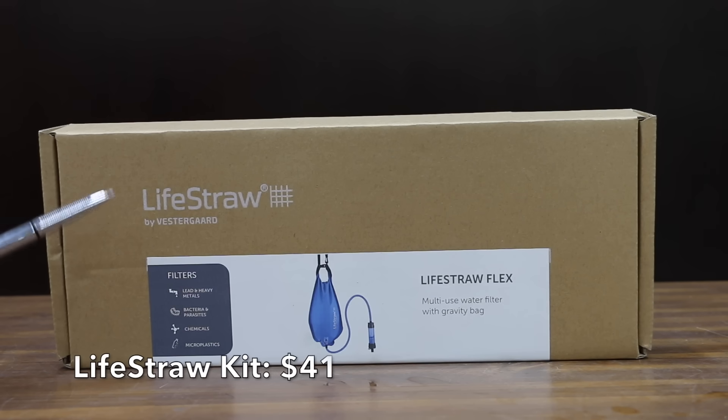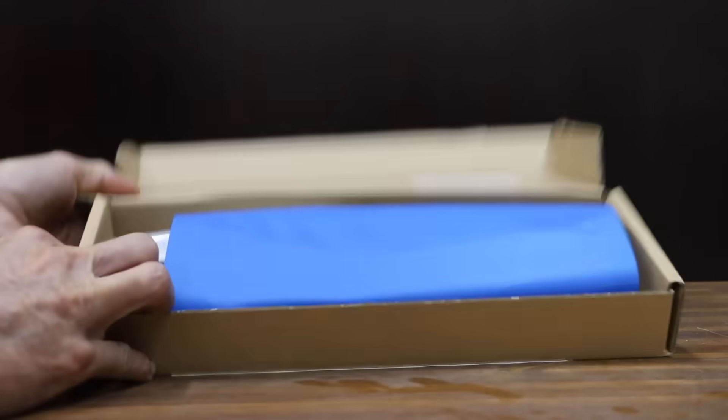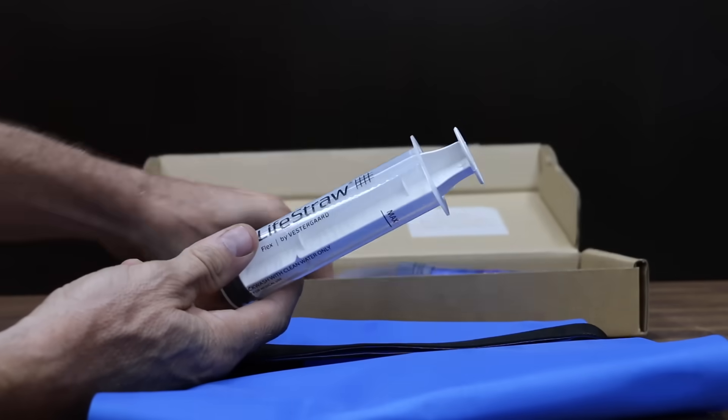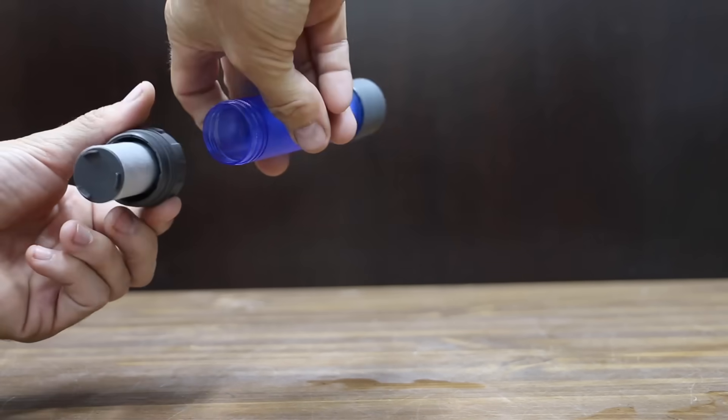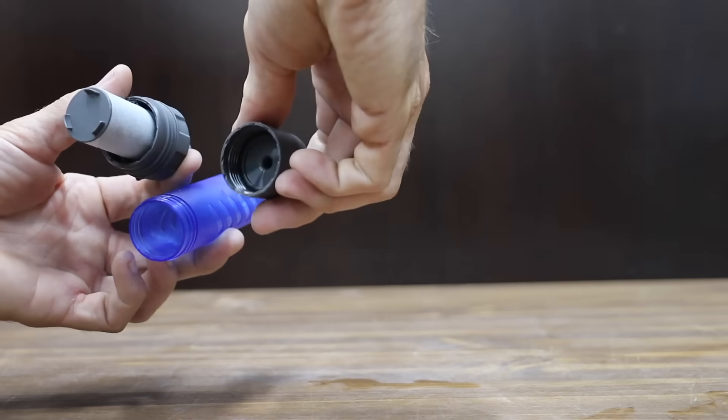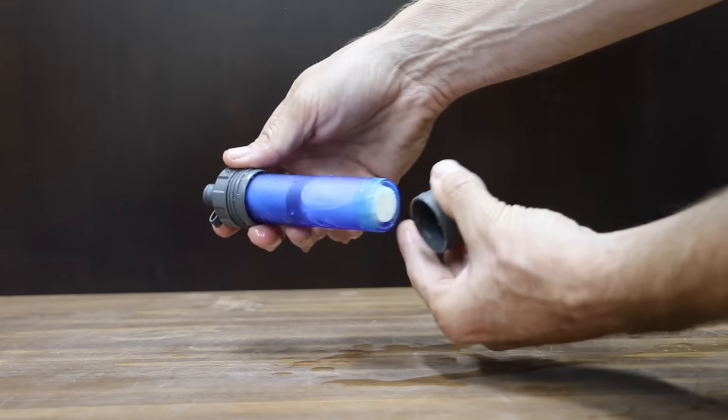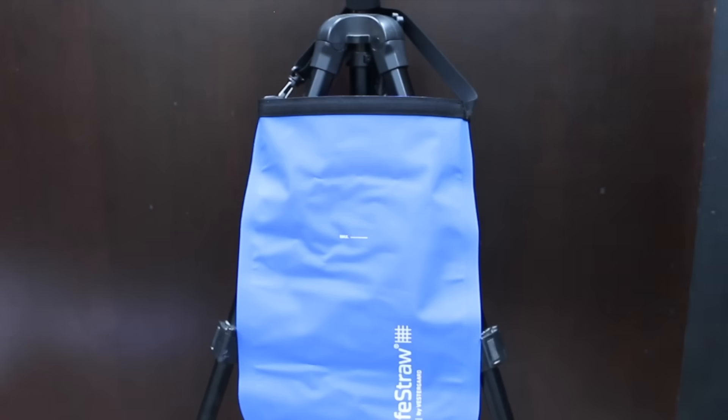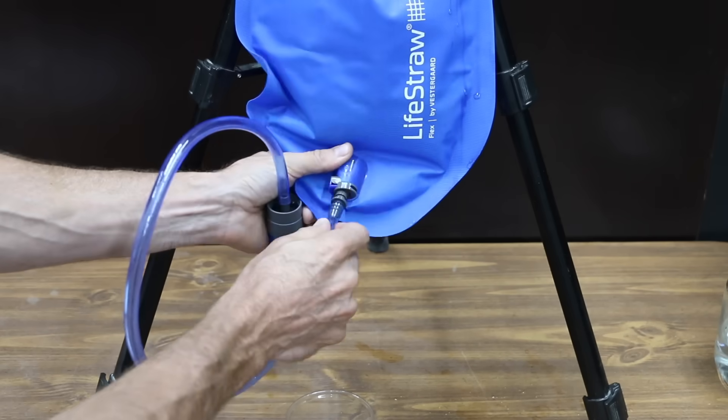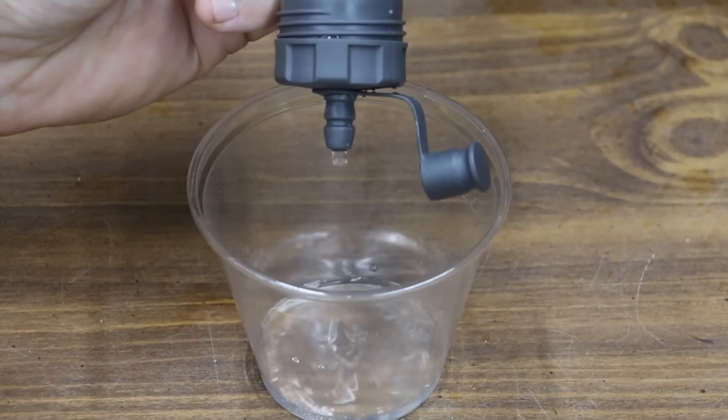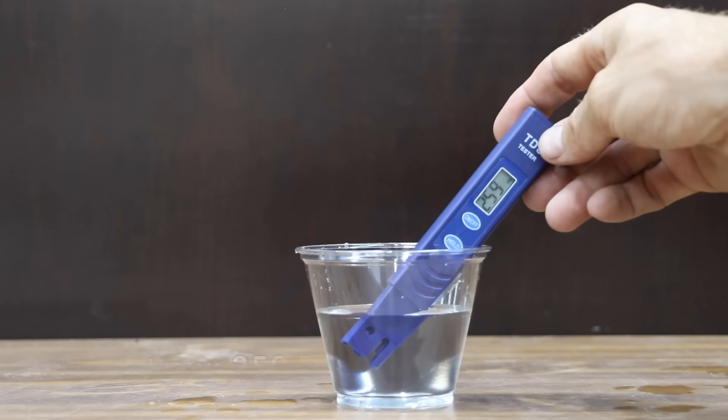At a price of $41 is this LifeStraw Flex Multi-Use Water Filter with Gravity Bag. 0.2 micron pore size removes 99.99% of bacteria, protozoa, and microplastics. Prior to the first use of LifeStraw Flex, open top and bottom screw cap and rinse all parts with clean water. Reassemble and LifeStraw Flex is ready to use. Fill the bag with water. Roll the top of the bag three times. Insert the hose in the filter. Connect the hose to the quick connect part on the bag. 259 parts per million for the LifeStraw.